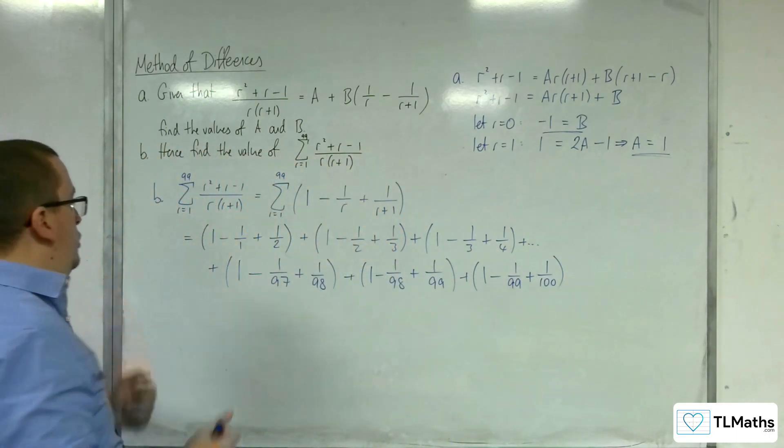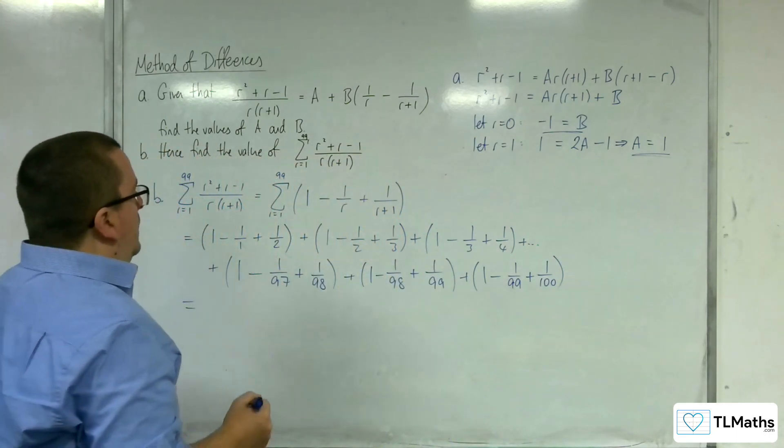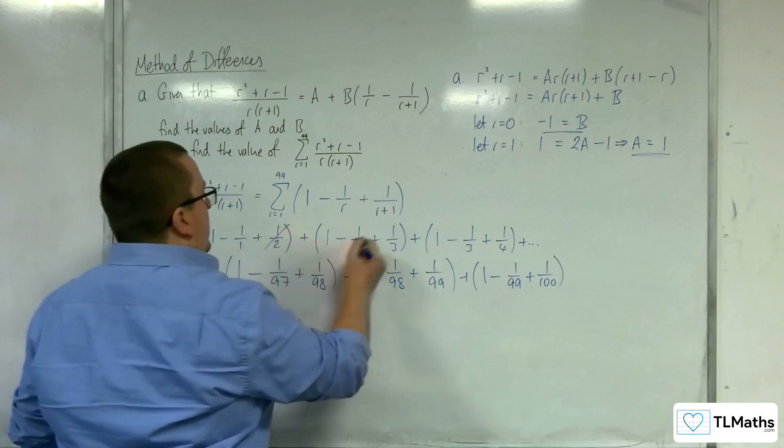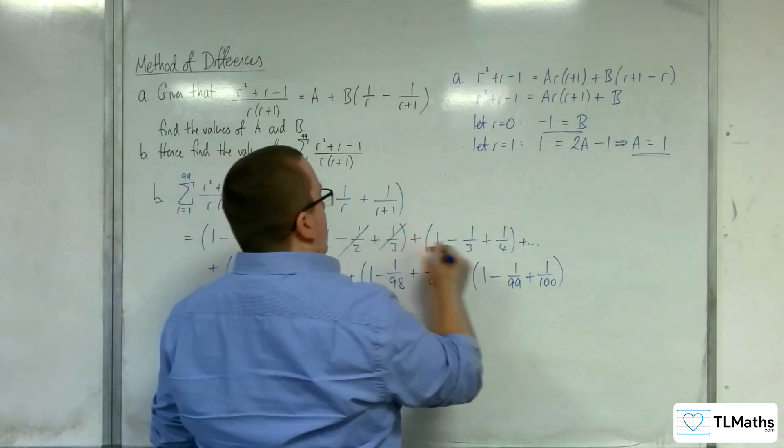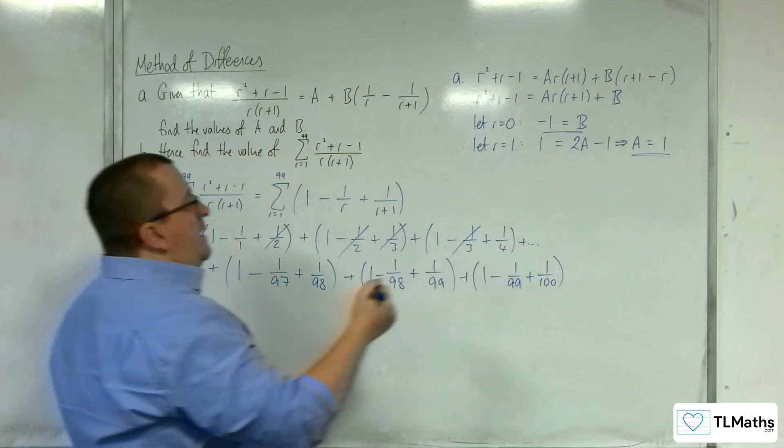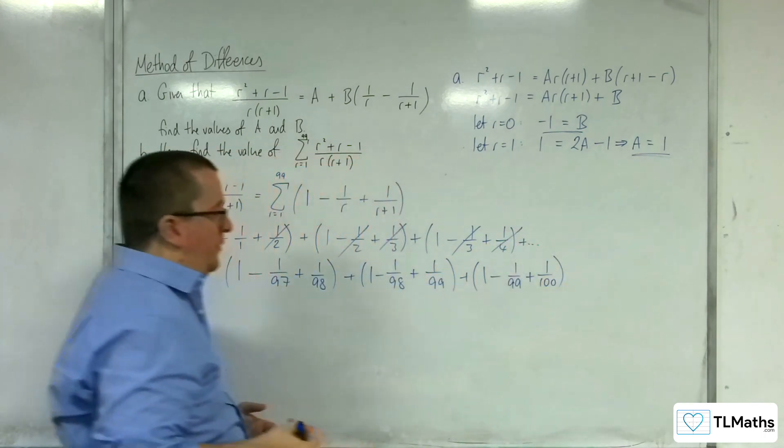So let's see if we can spot the cancellations. So we've clearly got a half cancelling with minus a half there. We've got the third cancelling with minus a third. And we're going to have the quarter cancelling with a later quarter.